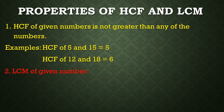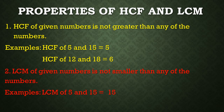Second property: LCM of given numbers is not smaller than any of the numbers. For example, LCM of 5 and 15 is equal to 15, and 15 is not smaller than 5 and 15. Let us take one more example. LCM of 12 and 18 is equal to 36, and 36 is not smaller than 12 and 18.